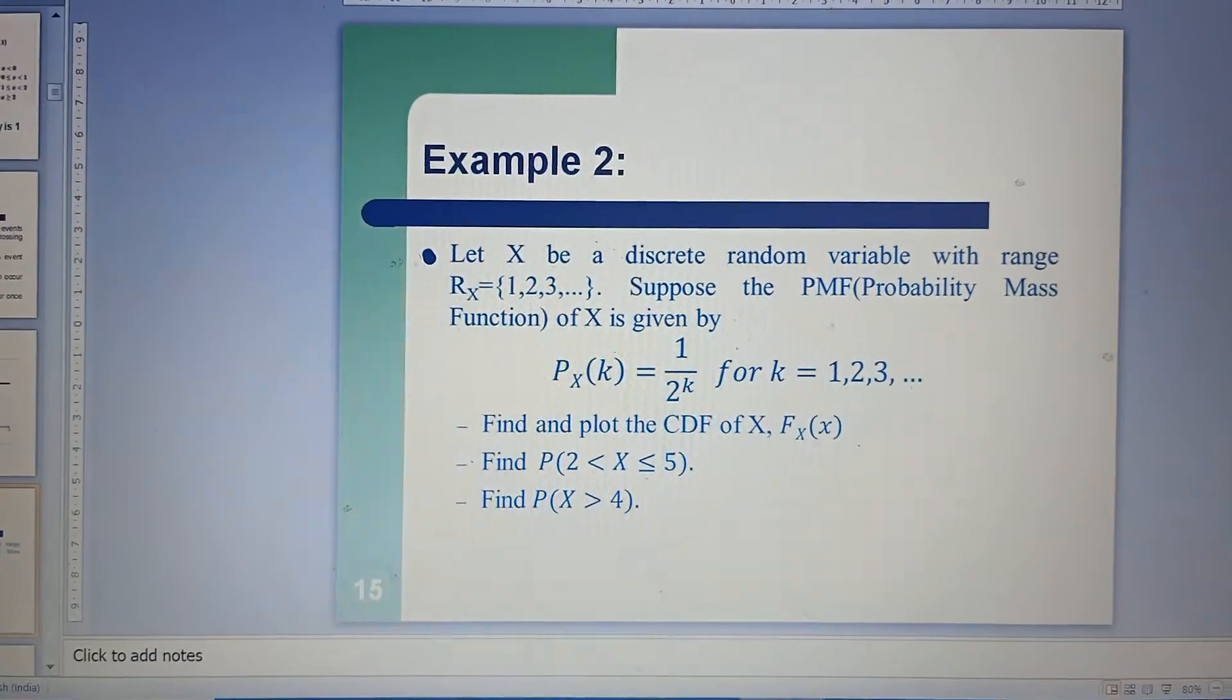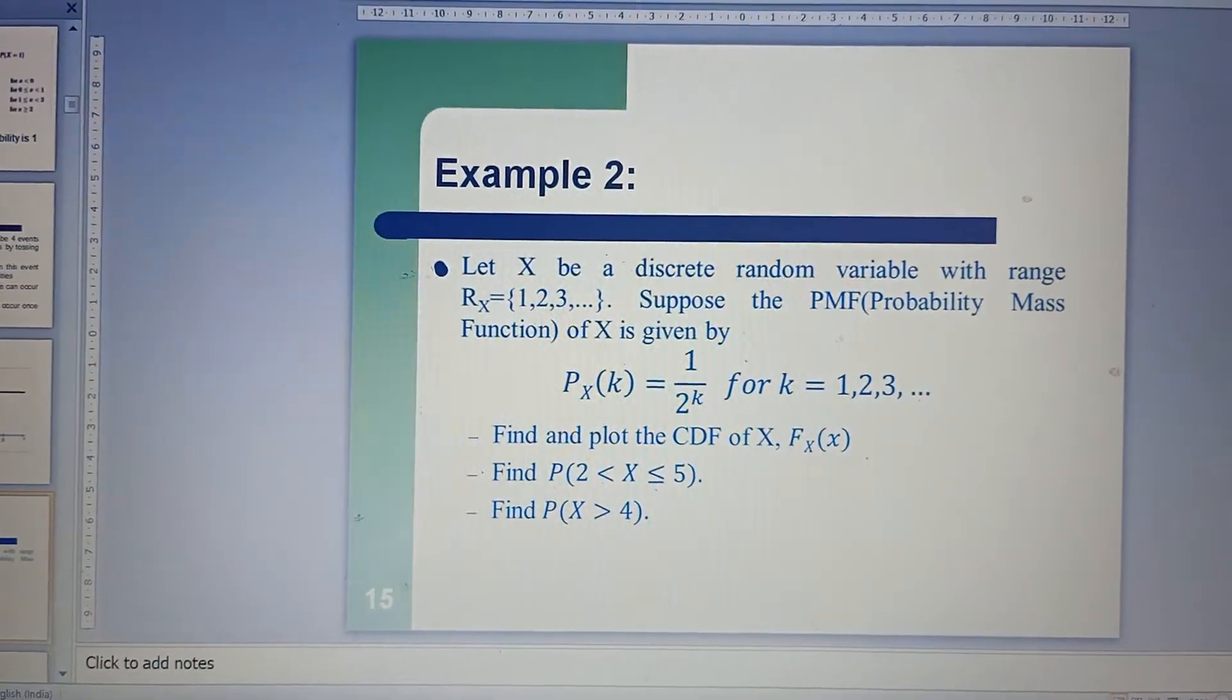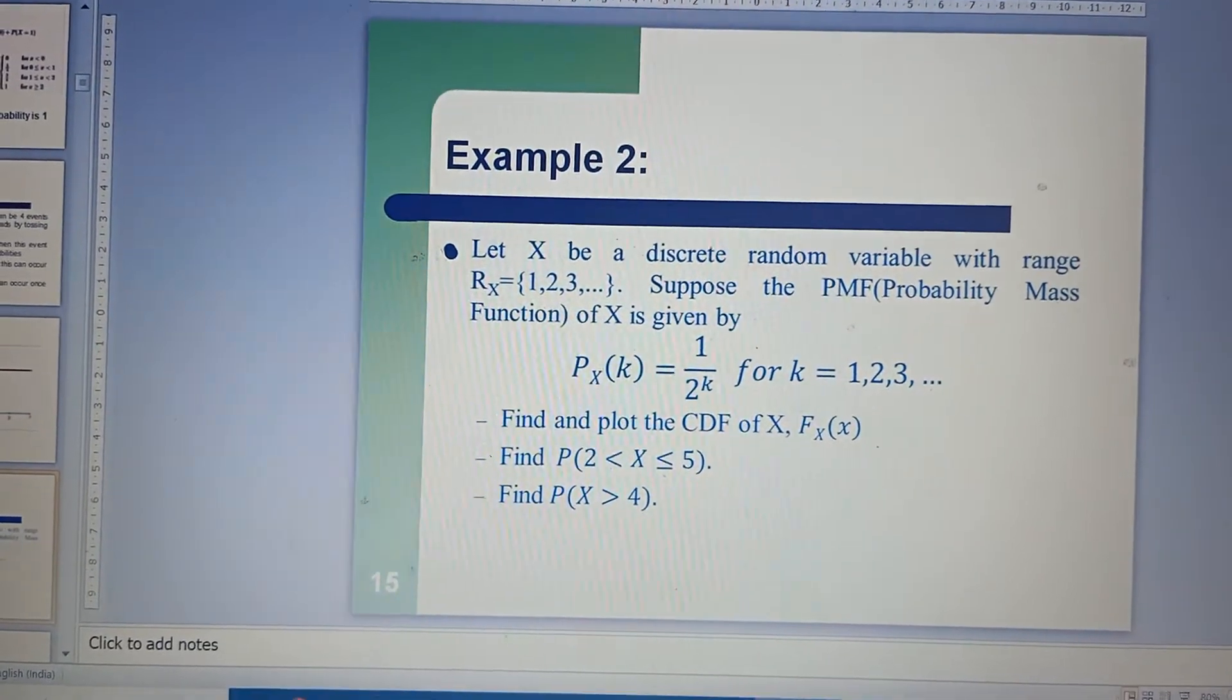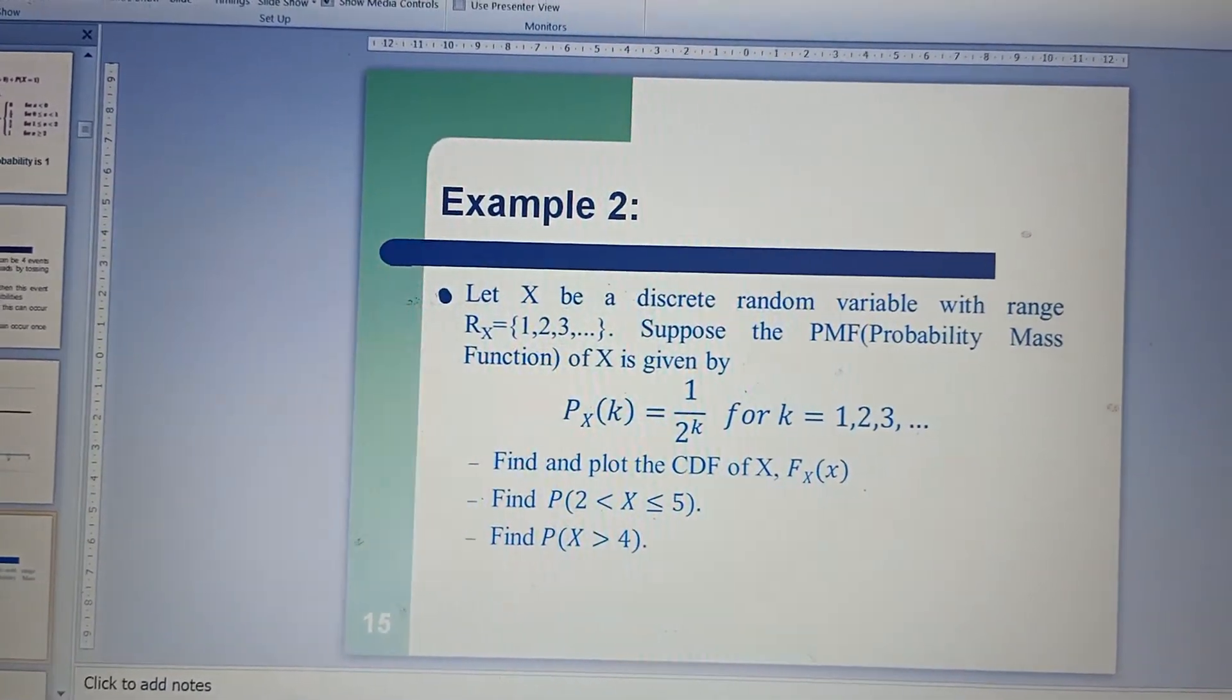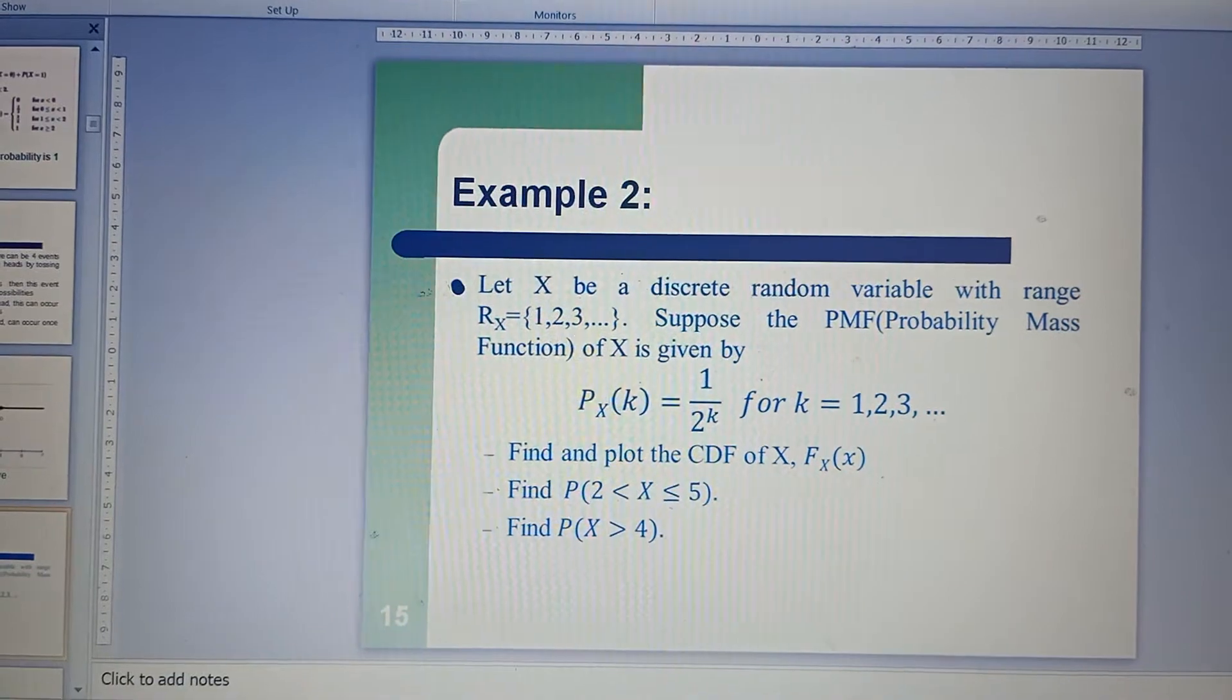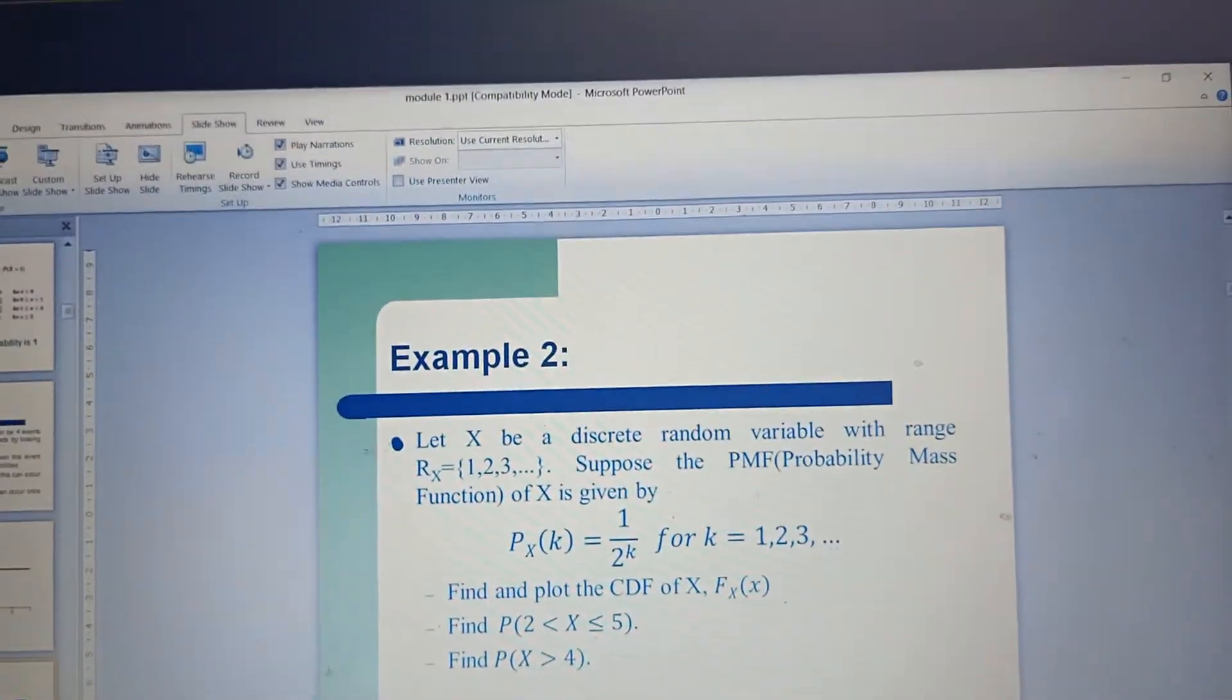The question asks: find and plot the cumulative distribution function of the random variable X, where X is a discrete random variable. Then find the probability of the random variable being greater than 2 and less than or equal to 5, and also find the probability of the random variable being greater than 4. Let us see the solution for this.